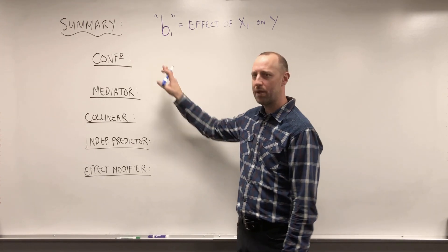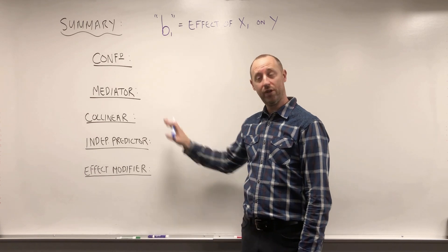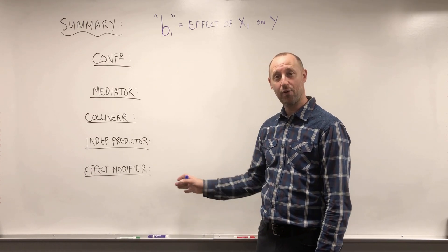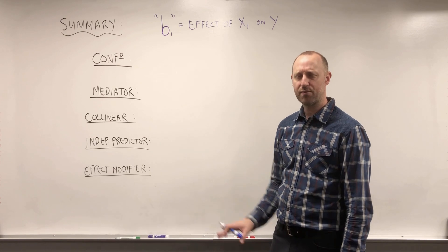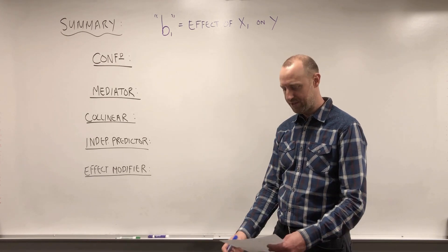And we talked about what it meant for a variable to be a confounder, mediator, collinear variable, an independent predictor, or an effect modifier. So let's just remind ourselves of exactly what those were and how we should deal with each of these.